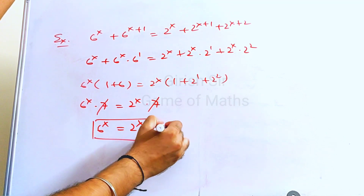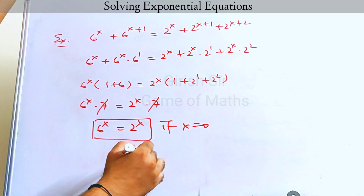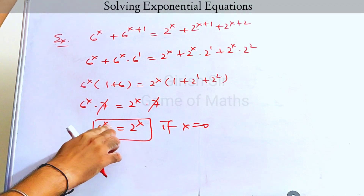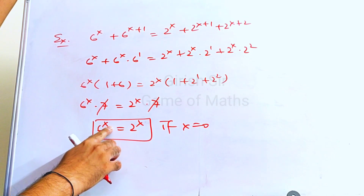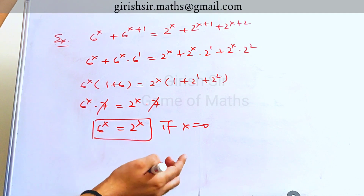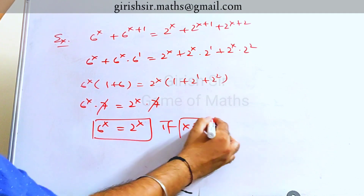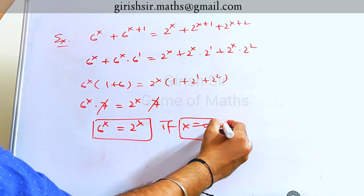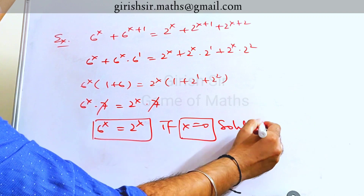Now this is true if x is 0. If x is 0, we get 6 raised to 0, which is 1, equal to 2 raised to 0, which is also 1. So x equal to 0 is the possible solution.